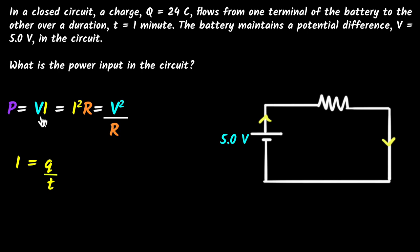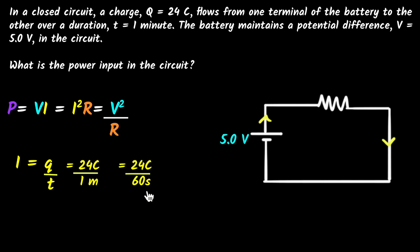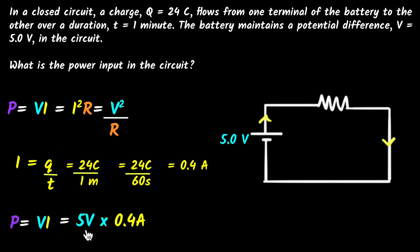Pause the video and see if you can try this on your own first. So since current equals Q over t, the charge is 24 coulombs and the time is one minute. I need to be careful about units — one minute is 60 seconds. So this becomes 24 coulombs divided by 60 seconds, which gives 0.4 amperes. Now with the current and the voltage, P equals V times I equals 5 times 0.4 equals 2 watts. The power input in the circuit is 2 watts.